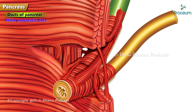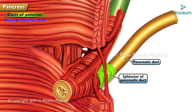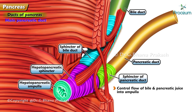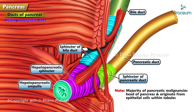The smooth muscle sphincters — the sphincter of the pancreatic duct around the terminal part of the pancreatic duct, the sphincter of the bile duct around the termination of the bile duct, and the hepatopancreatic sphincter of Oddi around the hepatopancreatic ampulla — control the flow of bile and pancreatic juice into the ampulla and prevent reflux of duodenal content. An important point: the majority of pancreatic malignancies are located in the head of the pancreas and originate from epithelial cells within the tubules.